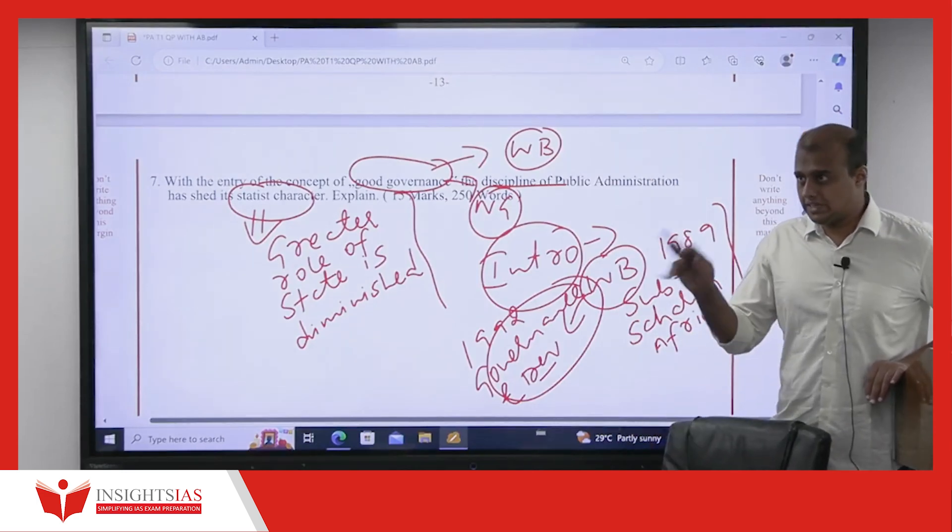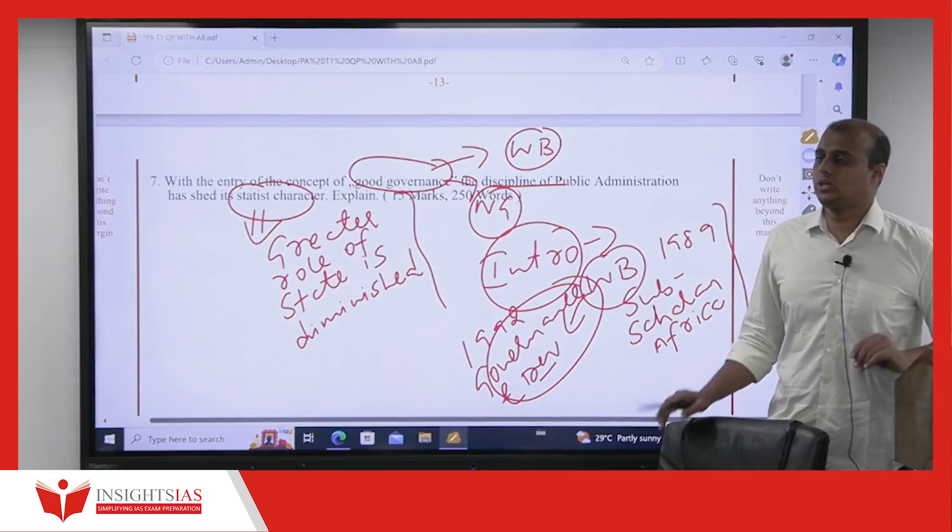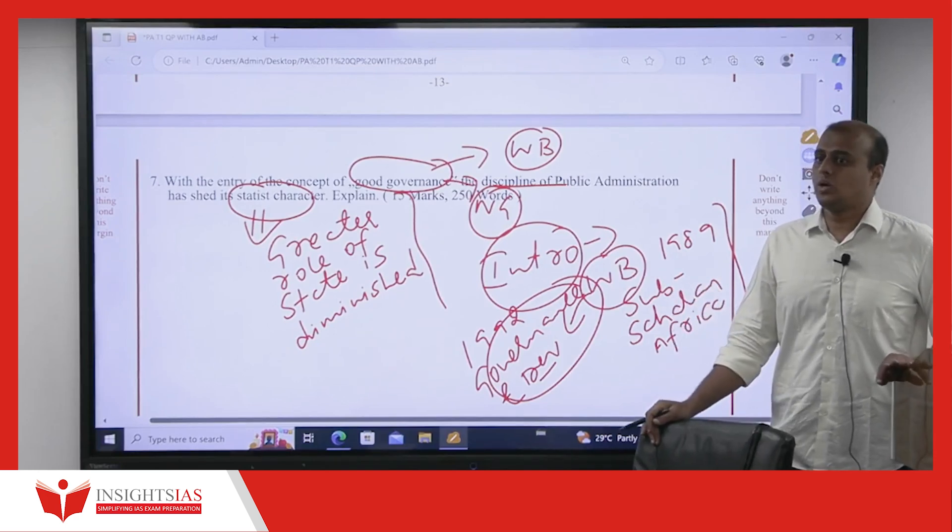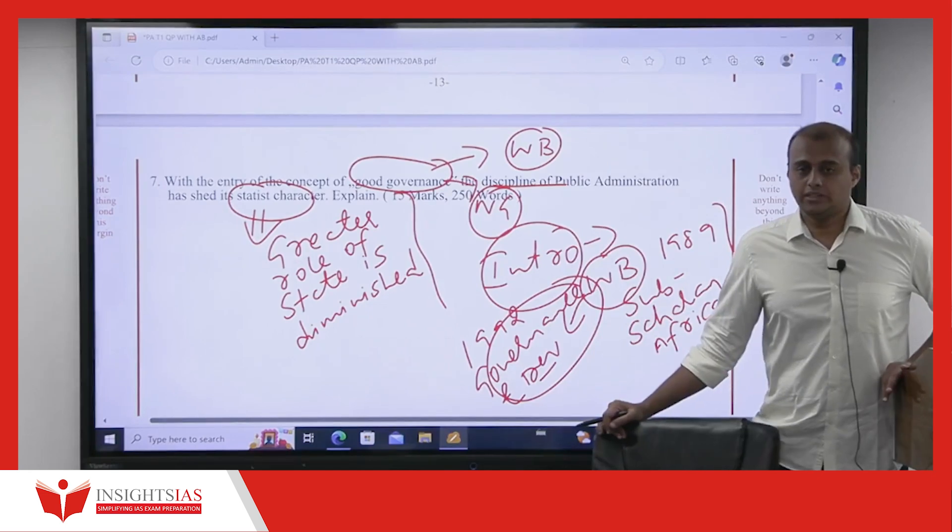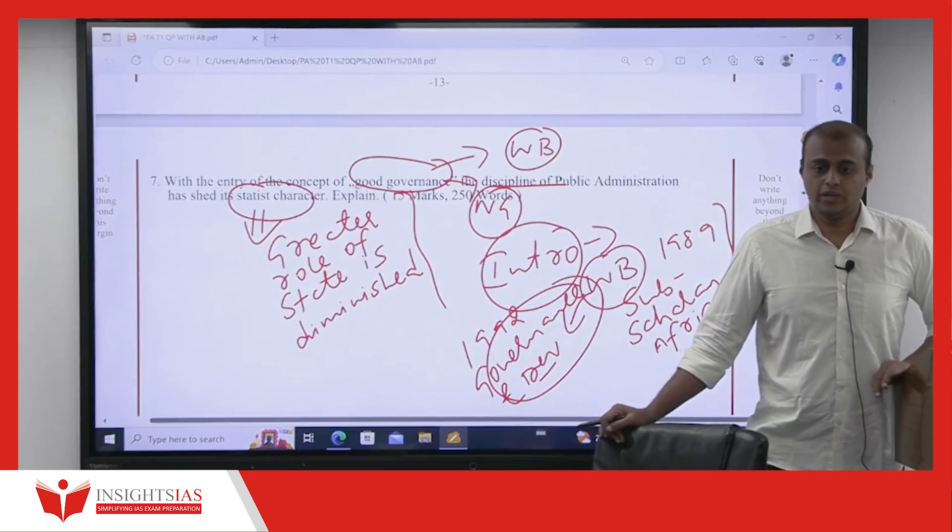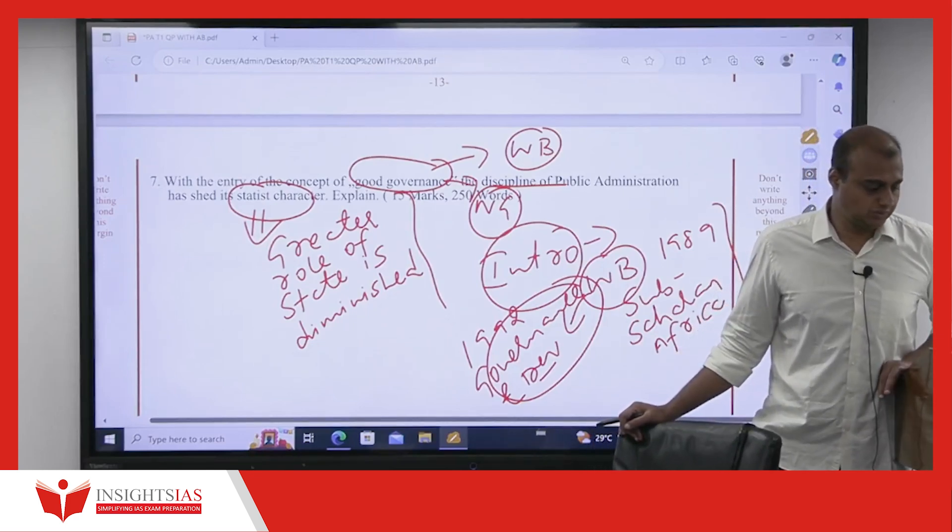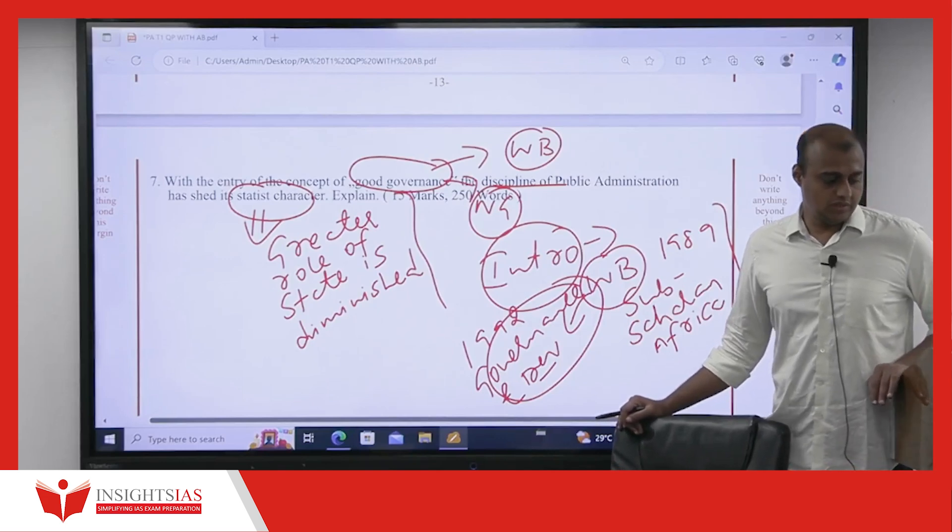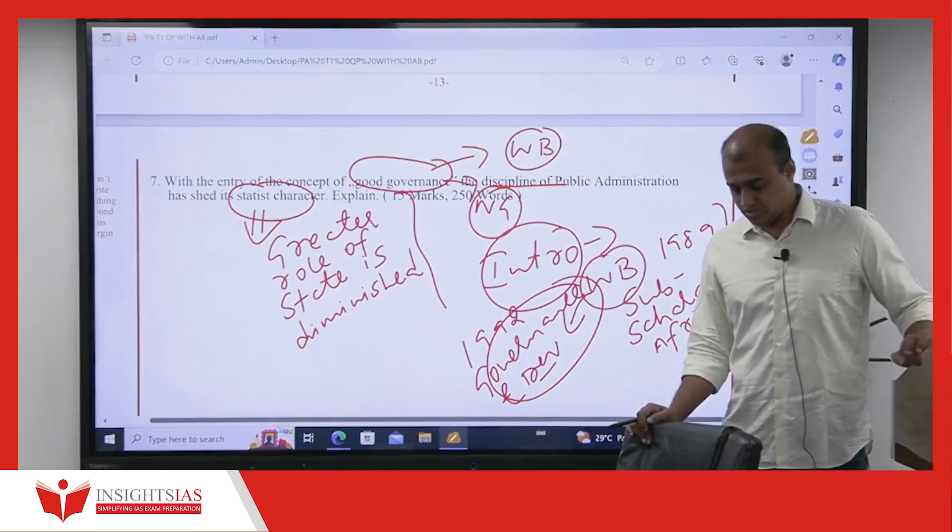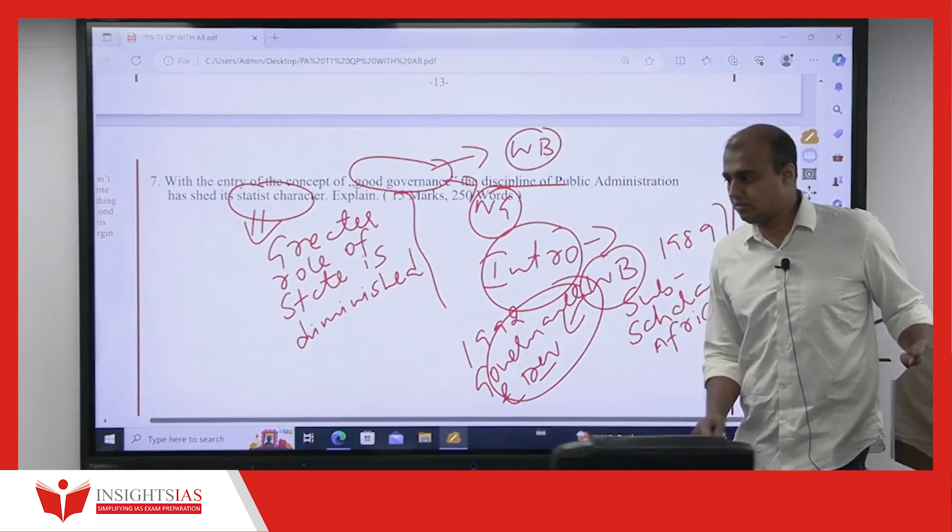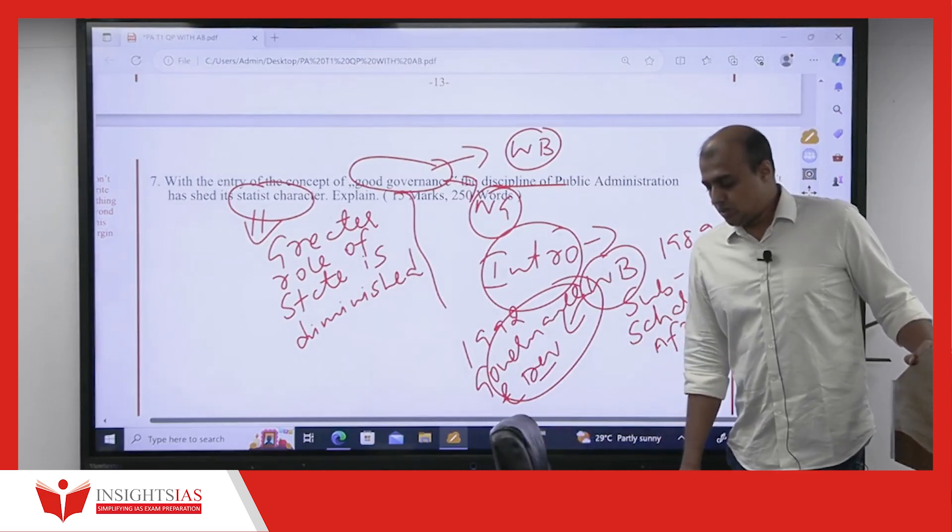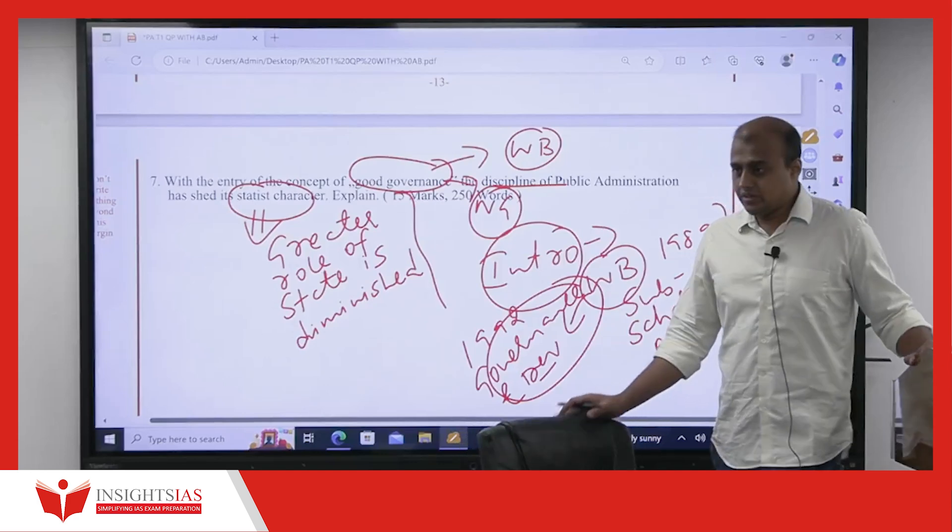World Bank defines good governance as effective utilization of the resources to achieve the larger public interest. Effective utilization or allocation of the resources to achieve the larger public interest.